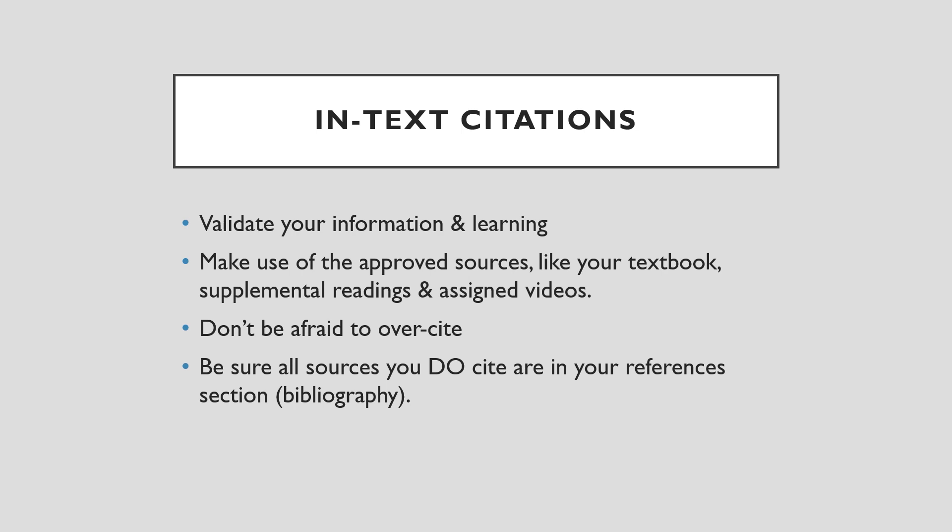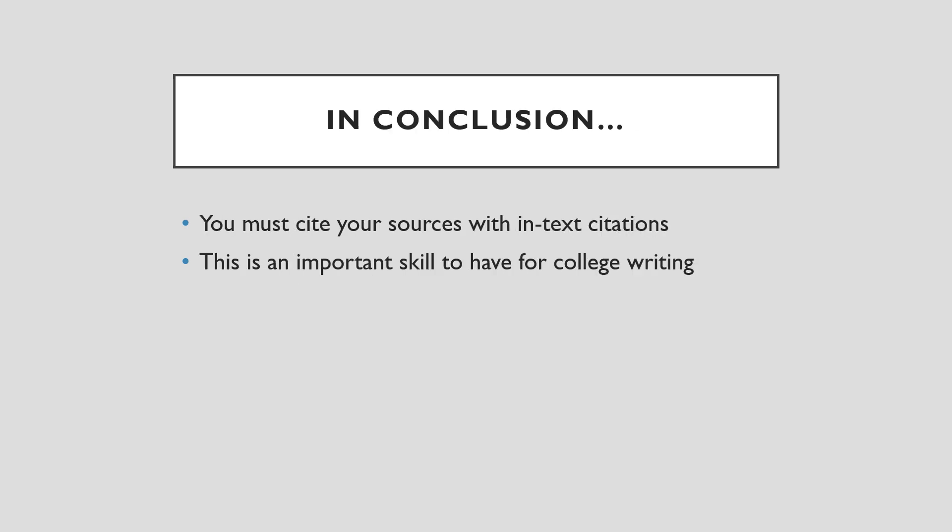Some benefits of in-text citations include the fact that they validate your information and learning, and prove that you made use of your approved sources like your textbook, supplemental readings, and assigned videos. It's never too many — over-citing is never a bad thing. In one paragraph, if you have many sentences from one source, you don't have to cite each sentence; you can cite just the last one in that series. Make sure all sources you cite are in your references section or bibliography. To conclude, you must cite your sources with in-text citations — an important skill not just for this class but for college writing in general.